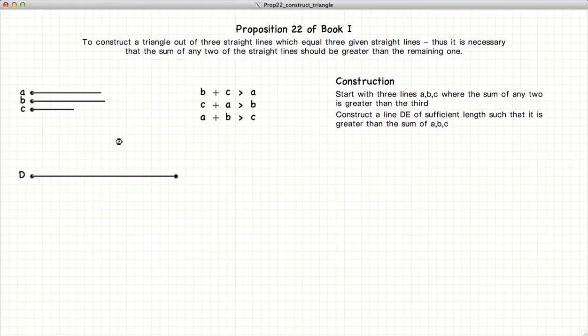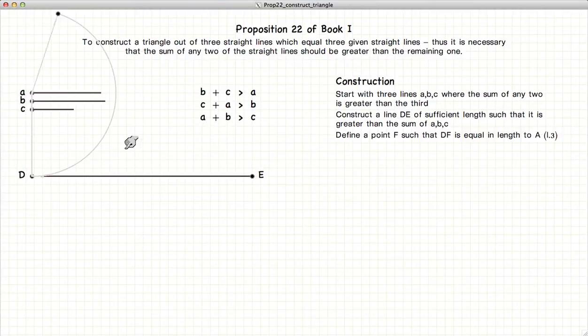So the first thing we're going to do is draw a line, DE, such that it is larger than the sum of these three lines. Next, we're going to copy the line A onto the point D, using the methods described in Proposition 3. So now DF is equal to length A.